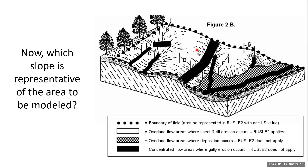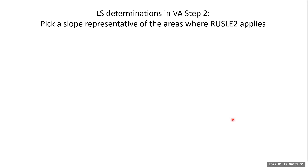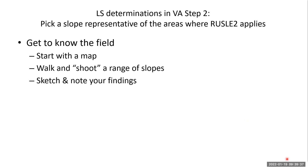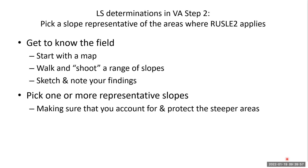Next question: which slope is going to be representative of the area to be modeled? For example, slope G might not be anywhere near as steep as slope D or F, so we have to choose. The guidance document advises: pick a slope that's representative of the areas in the field where RUSLE2 applies. Start with a map, but the recommended approach is to walk a lot and do what we call shooting slopes. Short pencils are better than long memory — sketch on the map where you shot your slopes.